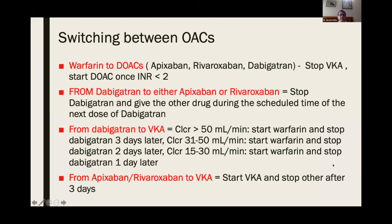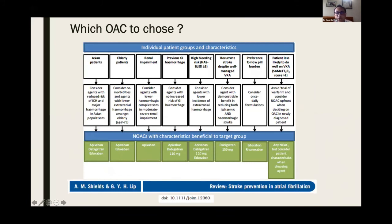The choice of anticoagulation also depends on patient preference and clinical conditions. For Asian patients with high ICH risk, apixaban is preferable. For elderly patients with high bleed risk, apixaban. In renal impairment, apixaban has an advantage. For patients with GI bleed, again apixaban. For patients with more than 3 bleeds, apixaban. For patients with recurrent stroke on VKA, dabigatran. For patients with compliance issues requiring once-daily dosing, they may prefer rivaroxaban or edoxaban. These differences in practical usage guide the choice. All agents are good, but there are differences in their practical application.